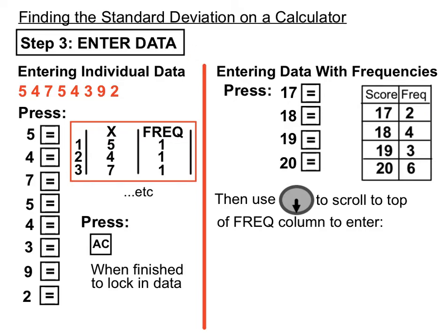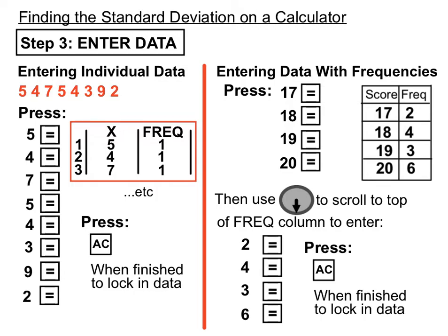So once we're in that spot up there, what we'll do is we'll enter the frequencies in a very similar way as we did to the scores in the other one. So we'll press 2 then equals, then 4 then equals, then 3 then equals, then 6 then equals and once again, we'll press AC to indicate to the calculator that we've finished entering the data and lock all that data in. So it's really just two rounds of data entry, one for the scores, then we arrow back up to the top of the frequency column and into the frequencies. Once we're done, we'll lock it in by pressing AC.